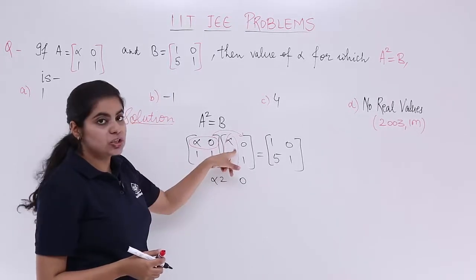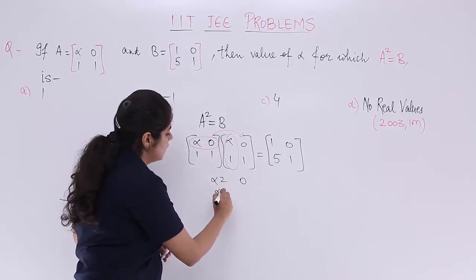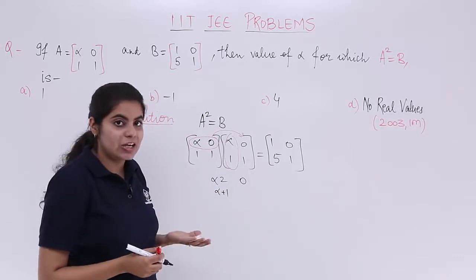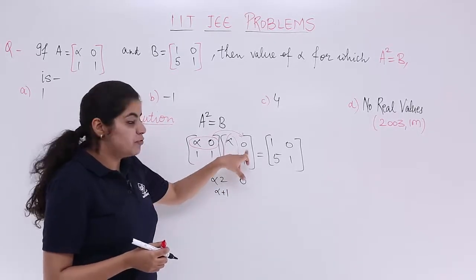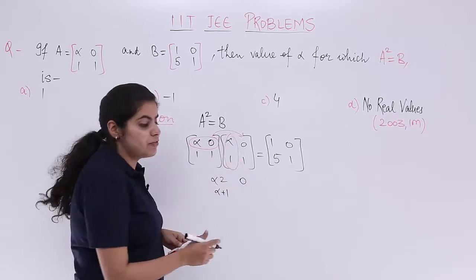Second row first column: so it is alpha plus 1. And second row second column: 0s are 0 and 1 × 1 = 1, so it is 1.